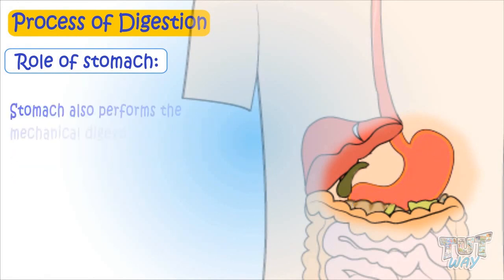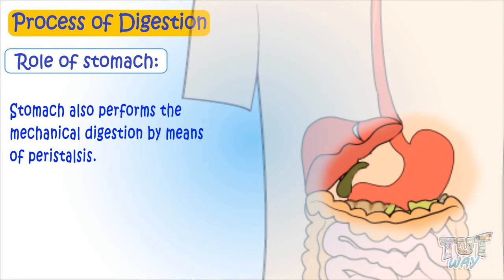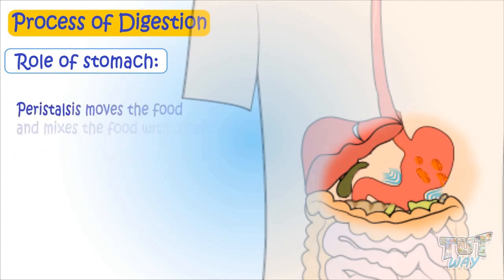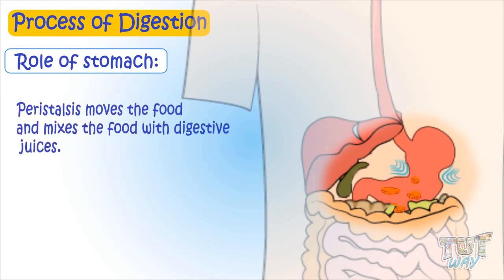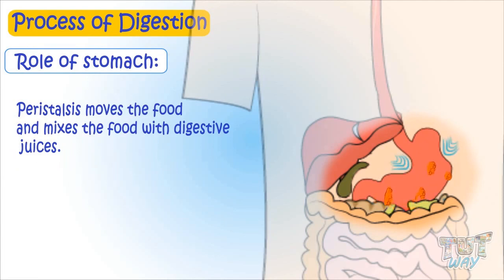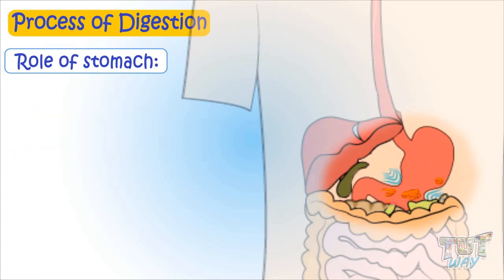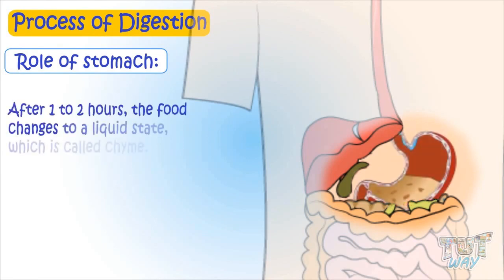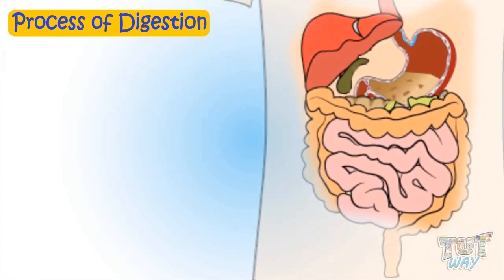The stomach also performs mechanical digestion by means of peristalsis, which moves the food and mixes it with digestive juices. After one to two hours, the food changes to a liquid state called chyme. This chyme from the stomach now enters the small intestine.